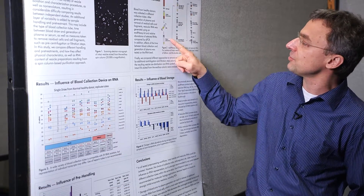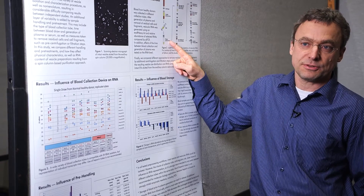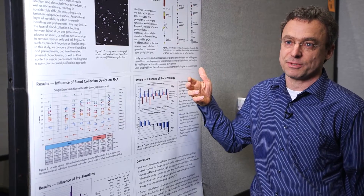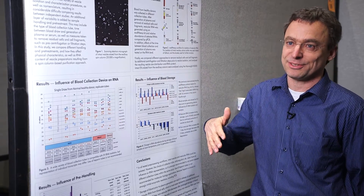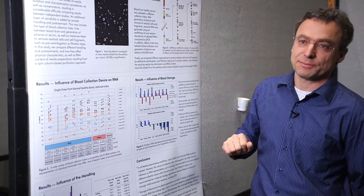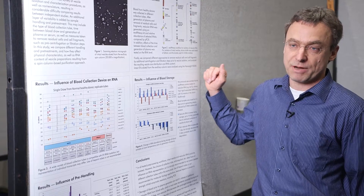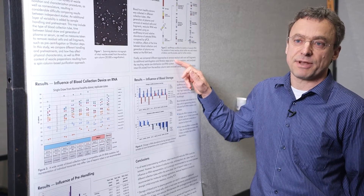First, before we start the actual protocol, we filter our plasma and serum to get rid of remaining cells, cell fragments, and debris. Then we mix with a binding buffer, apply to the column, and wash. If we're after the RNA, we elute with a lysis buffer to get a lysate and apply that to our RNA column. Alternatively, when we want intact vesicles, we use an aqueous buffer for elution, which gives us the vesicles directly.